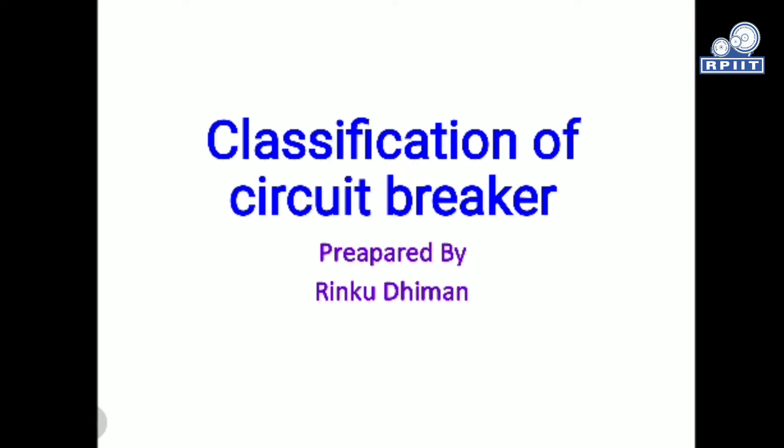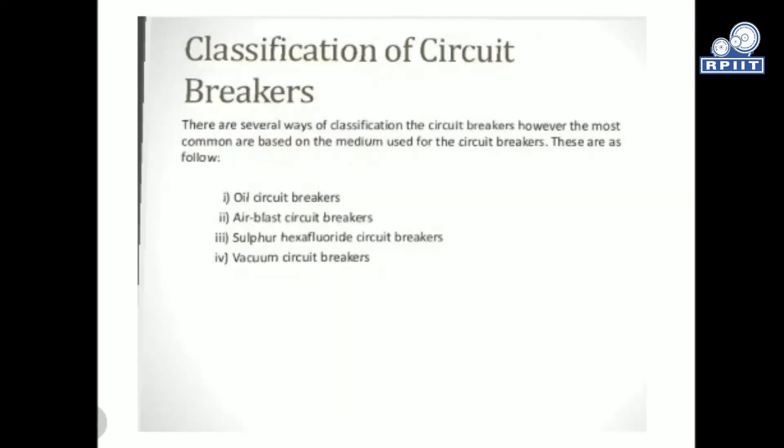The classification of circuit breakers covers several types used nowadays, like air circuit breaker, vacuum circuit breaker, SF6 circuit breaker, and so on. As we know, the circuit breaker is the main protecting device in our domestic, industrial, or power systems.